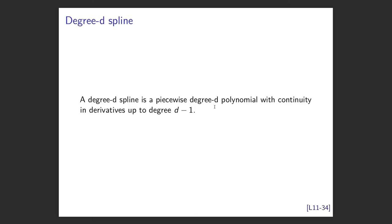More generally, a degree-d polynomial that is piecewise degree-d with continuity up to derivative d−1 is called a degree-d spline. We almost always use cubic splines. The human eye is satisfied once you have second-derivative smoothness — it looks like a pleasing line — and cubics provide enough flexibility without going over the top.